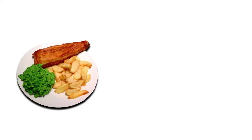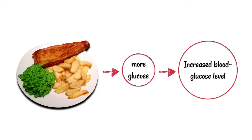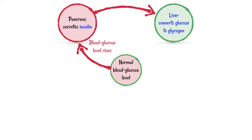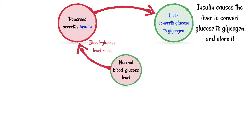Imagine you have a meal — some nice fish and chips — and suddenly your blood glucose level increases. Fortunately, your body is good at keeping this under control. The pancreas recognizes the rise in blood glucose and secretes a hormone called insulin. This hormone is received by the liver, telling it to convert glucose into glycogen. As glucose is removed from the blood, the blood glucose level falls back to its normal level.